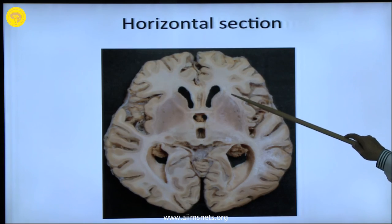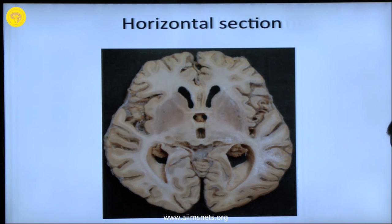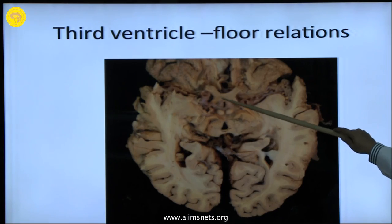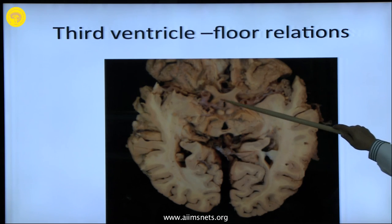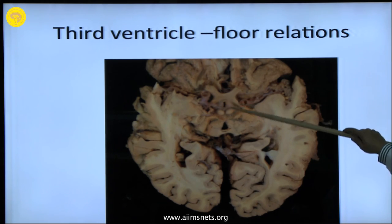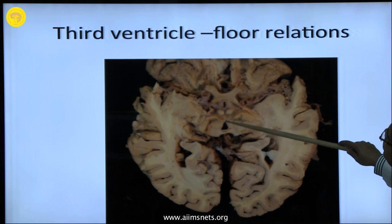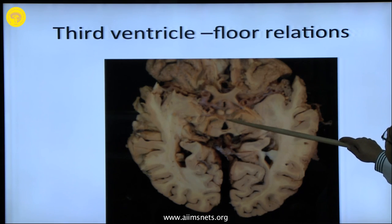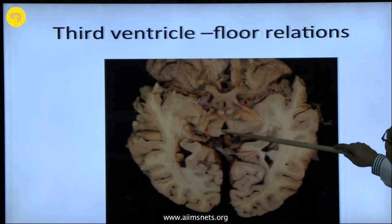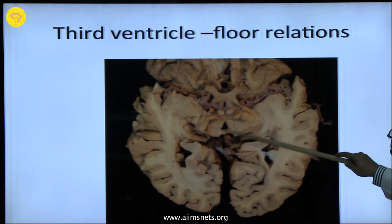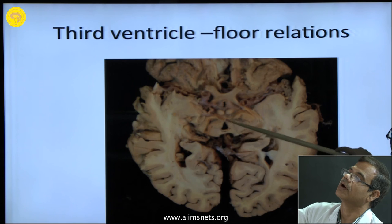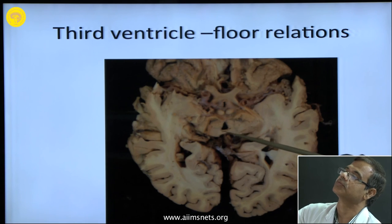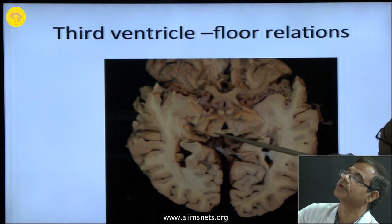Here a third ventriculostomy is already done. You can see the floor: the optic chiasma, then the internal carotid artery, the tuber cinereum with the ventriculostomy, the mammillary bodies, the posterior perforated substance, and part of the midbrain with the cerebral aqueduct — the junction between the third ventricle and the posterior commissure has already come here.